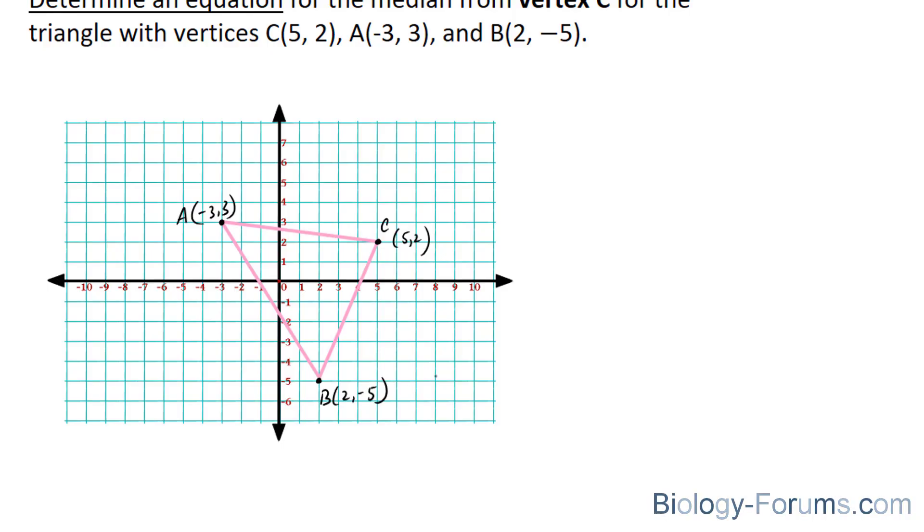They want us to determine the equation for the median from vertex C for this triangle. So what the median means is a straight line from C that will intersect A and B right in the middle of A and B.